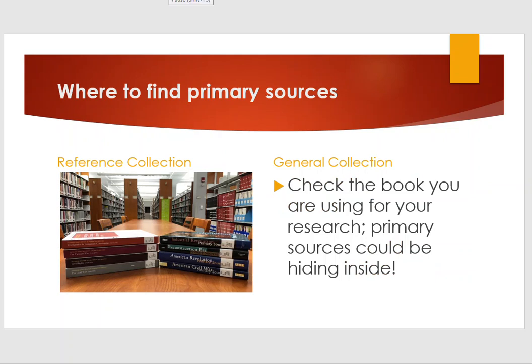You may be asking yourself, how do I find a primary source? You can find primary sources in a lot of different places — it really depends on the type of source you are looking for. The library has many reference books that contain nothing but primary sources. We also have books in the general collection that contain primary sources. Check the book you are using for your research — does it include primary sources like a letter or a government document? So many nonfiction books do, and they often go overlooked.